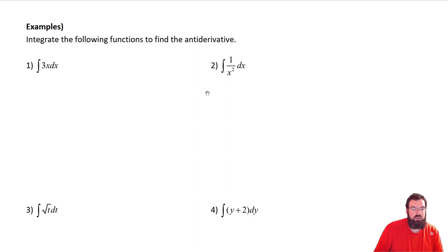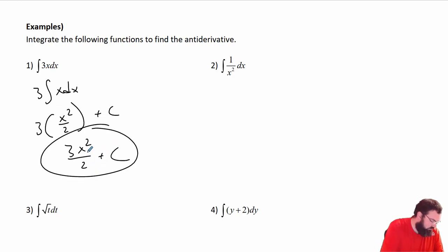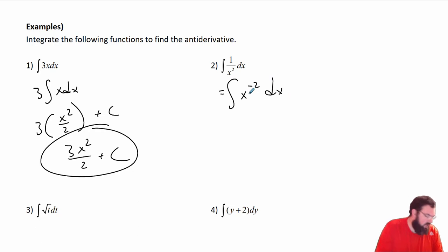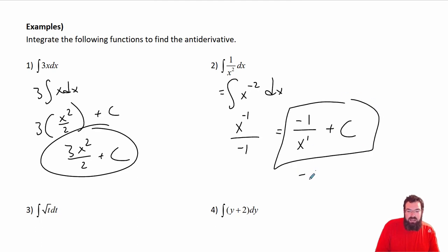Let's get to some examples. This one is the integral of 3x dx, which is 3 times the integral of x dx. By the power rule, that's 3 times x squared over 2 plus c, giving 3x squared over 2 plus c. This next one I'll rewrite as x to the negative 2 dx. Using the power rule, we get x to the negative 1 over negative 1, which is negative 1 over x plus c. You can also leave it as negative x to the negative 1 plus c — same thing.